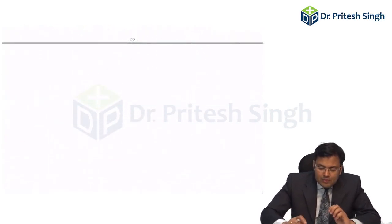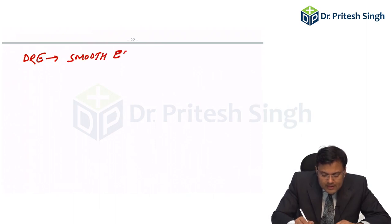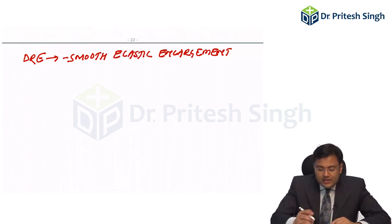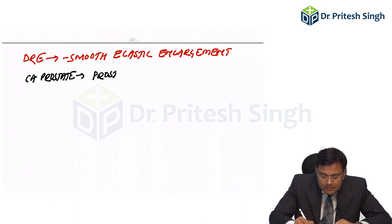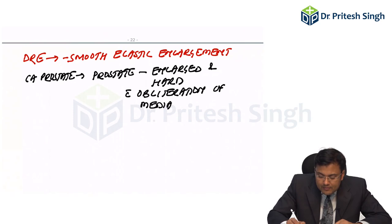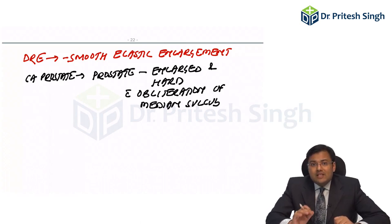In these patients, we perform digital rectal examination. The finding in BPH is smooth, elastic enlargement of the prostate. We can differentiate it from carcinoma prostate: in carcinoma prostate, the prostate is enlarged and hard with obliteration of the median sulcus. But since there is no correlation between size of prostate and severity of symptoms, we have to document the obstruction, and only after documenting obstruction can we confirm the diagnosis of BPH.